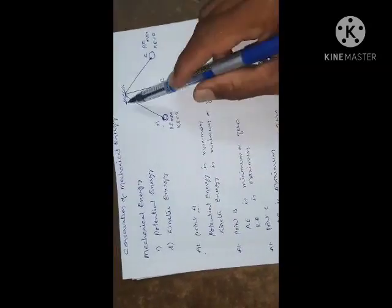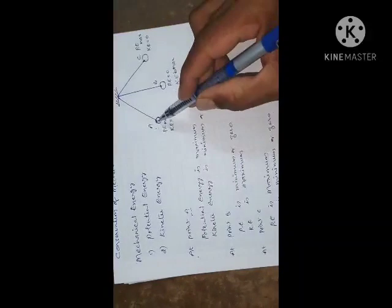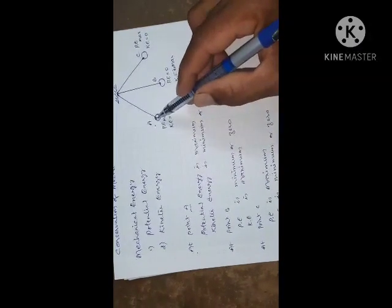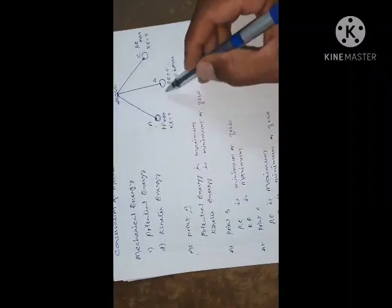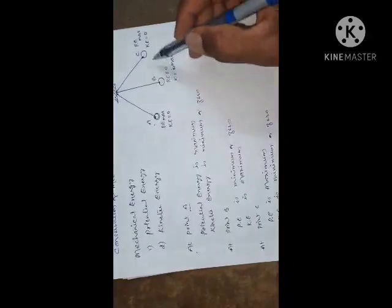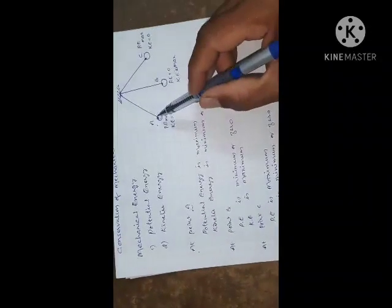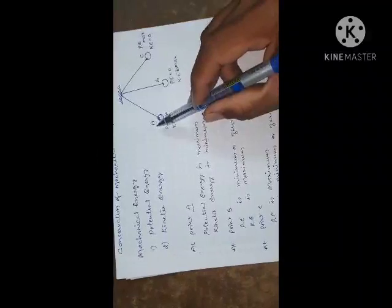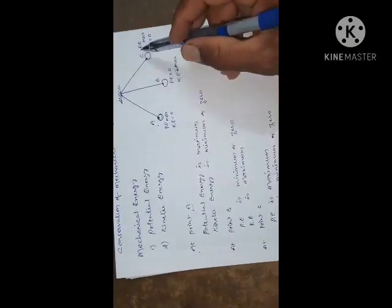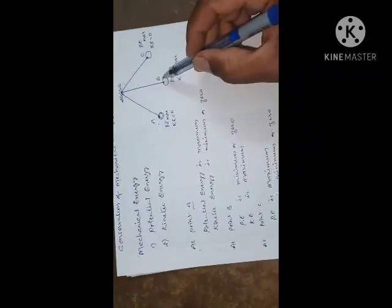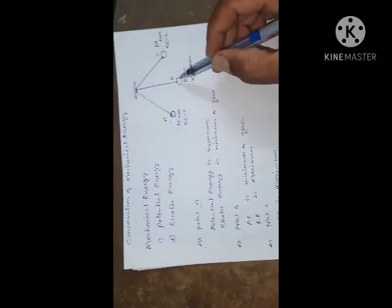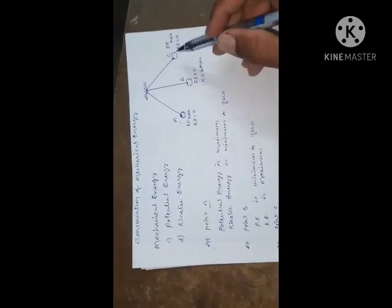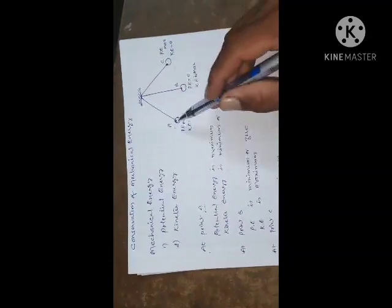Let us take a pendulum. The pendulum is pulled aside and released. The bob moves to and fro — the pendulum oscillates. Let us consider three points: A, B, and C. Point B is the mean position or equilibrium position. Points A and C are the extreme positions.